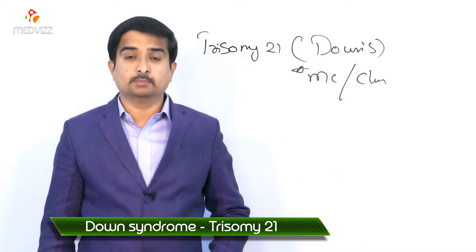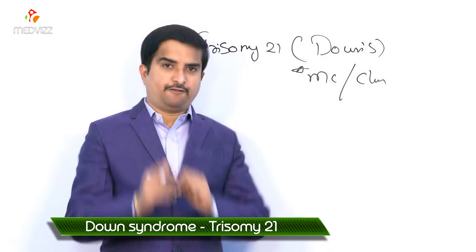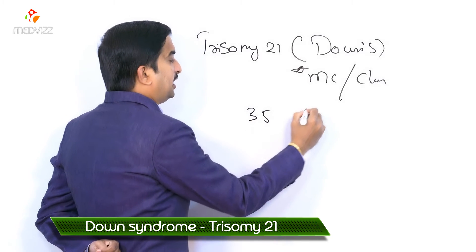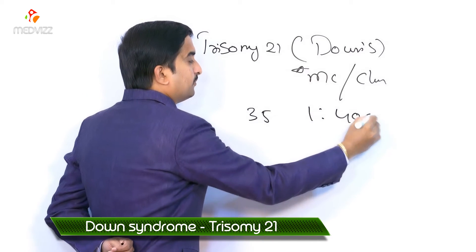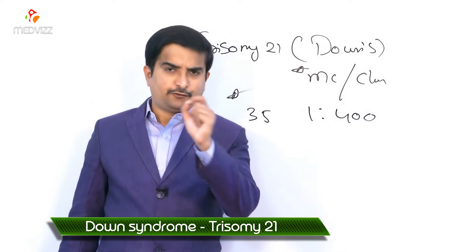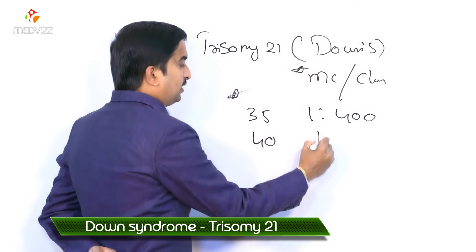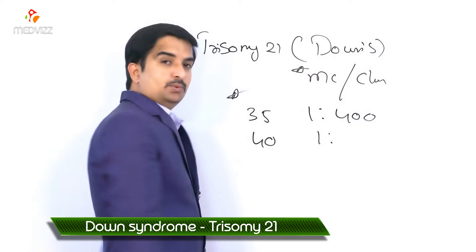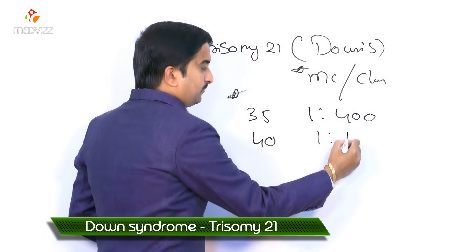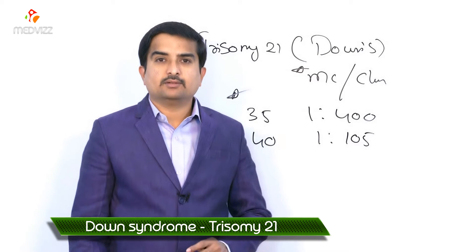If the mother is 35, the ratio is 1 in 400, and if the mother is 40, it is approximately 1 in 105.